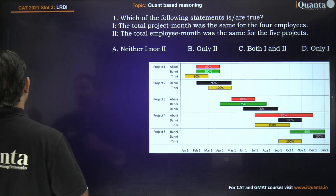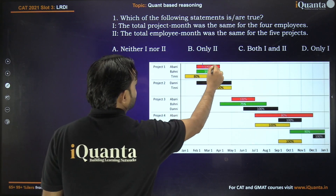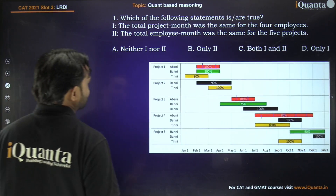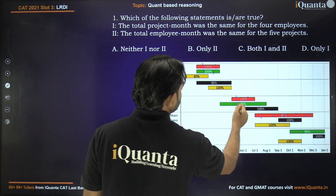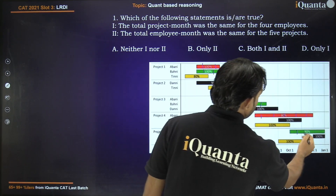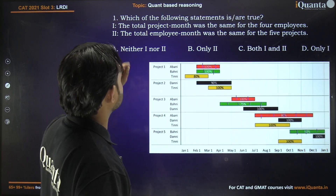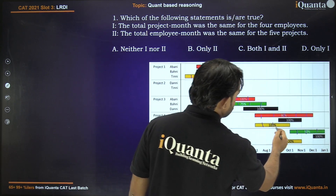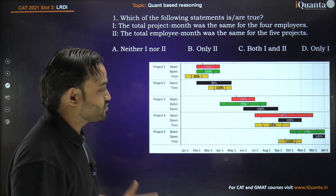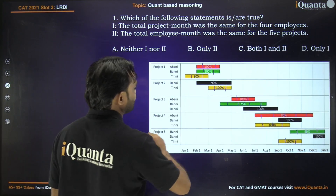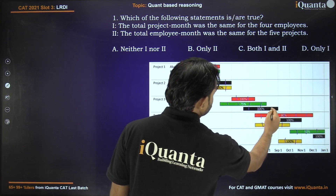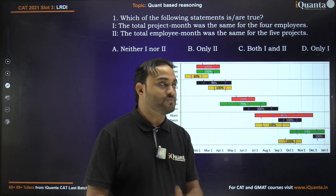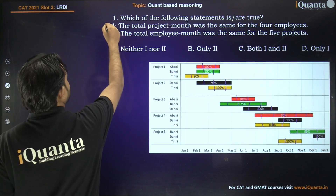For employee A, counting the months across all projects gives us 9. For B, the total project month is also 9. For T, the total number of project months is also 9. For D, it's also 9. So very clearly, the project month for each employee is the same. We can say statement 1 is definitely true.